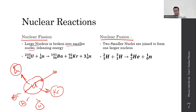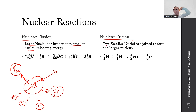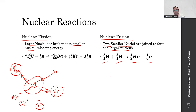Nuclear fusion also releases energy, but it currently only happens in the sun — though there's been recent very successful research at maintaining ignition and a sustained nuclear fusion reaction. Nuclear fusion is where two smaller nuclei are joined to form one larger nucleus. For example, two hydrogen isotopes join together to form helium, with leftover neutrons. That's fusion.